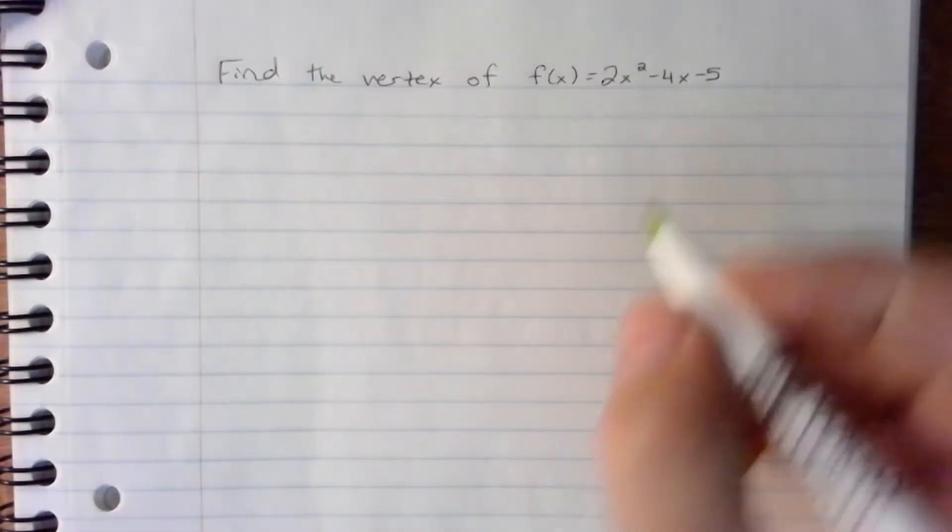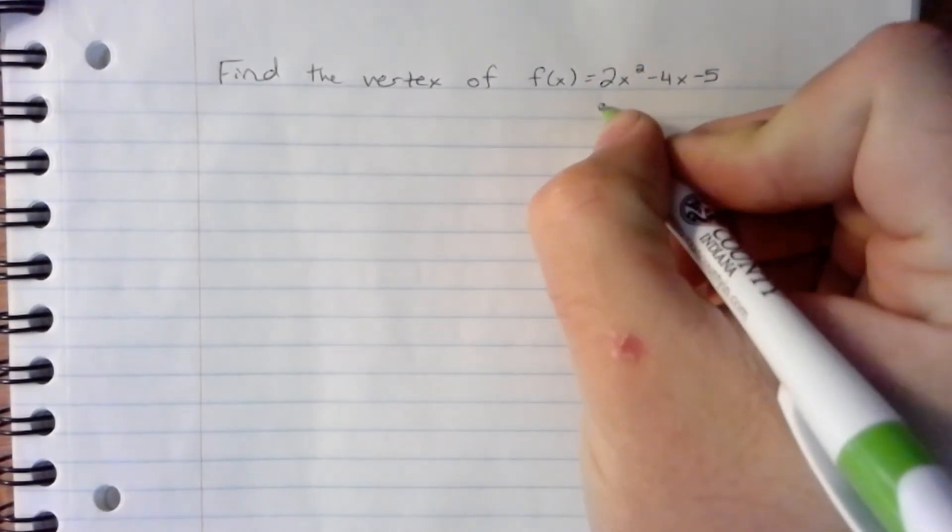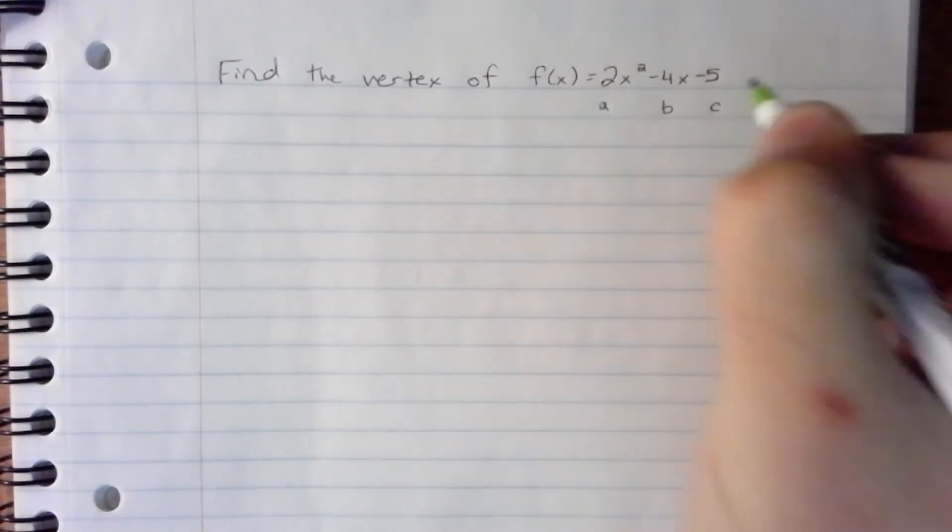First step is identify the a, b, and c number. a is 2, b is negative 4, c is negative 5.